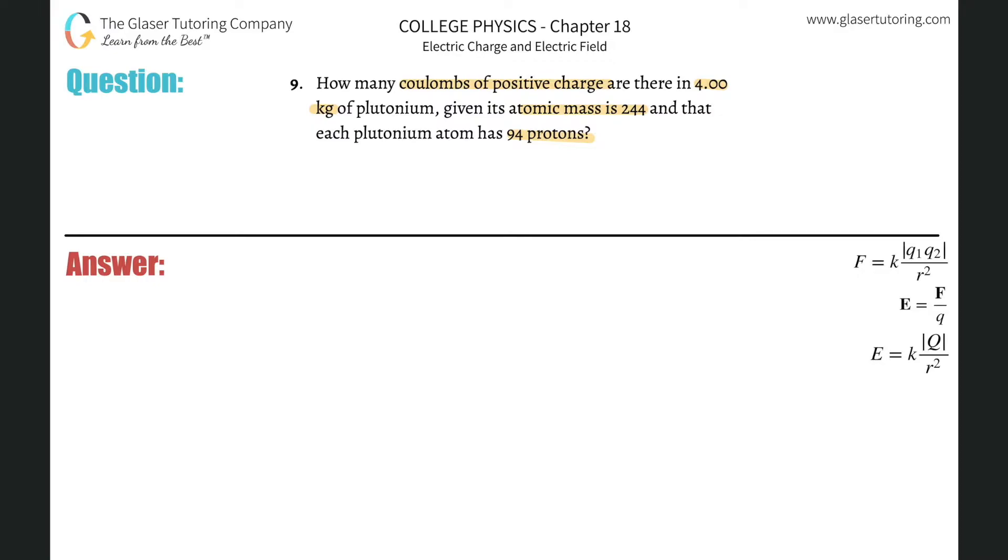Alrighty, so basically what I have to do first is find out how many atoms of plutonium we're dealing with. Why? Well, because they tell me each plutonium atom has 94 protons. So I have to somehow relate this mass, the four kilograms, to a number of atoms. So that's my first process,